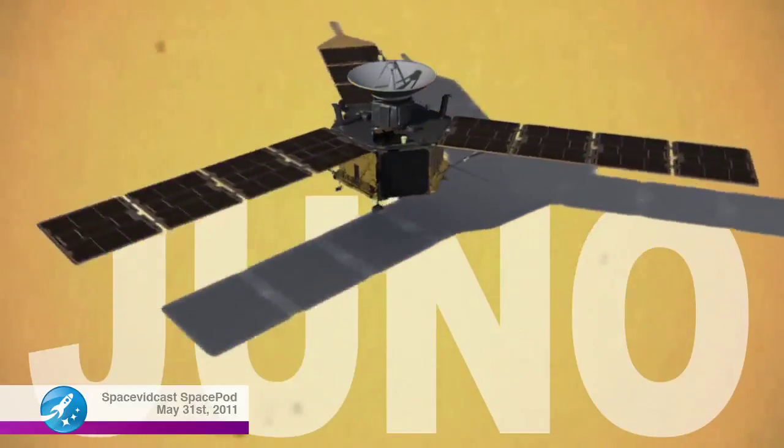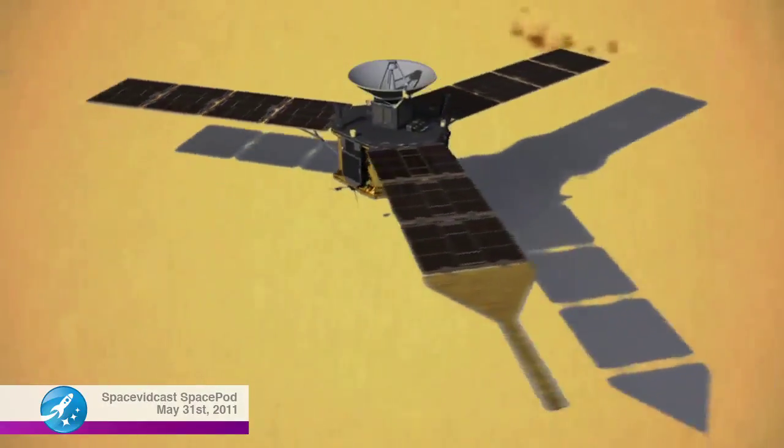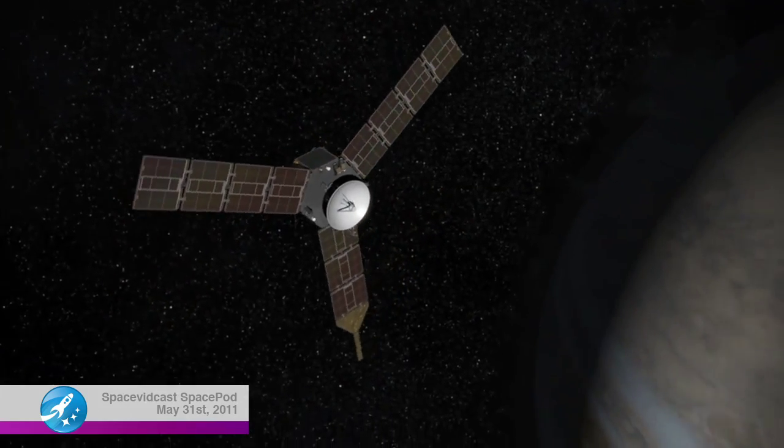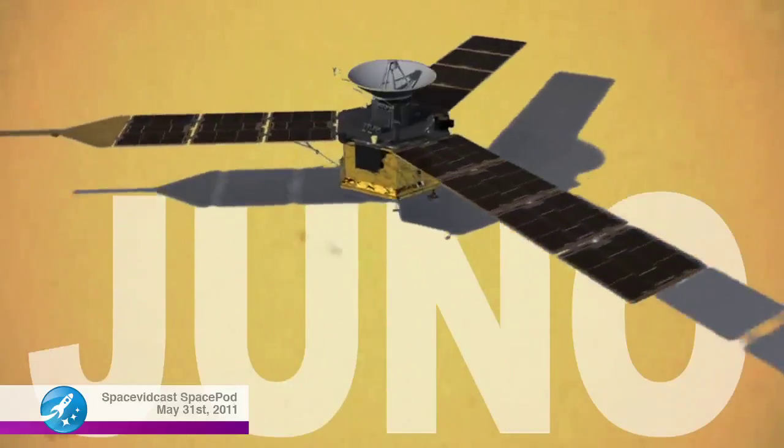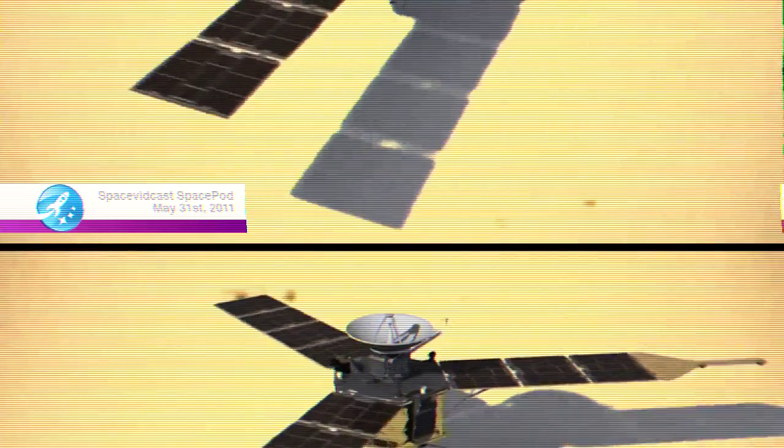Juno, with its suite of sophisticated science instruments and majestic solar panels. Juno, with its protective radiation vault. It's really hard to pick one part of the Juno spacecraft and say this is my favorite piece, because all the pieces work together.